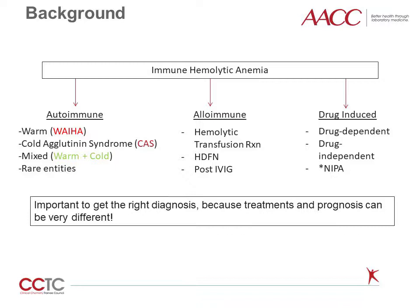Not all hemolysis is mediated by the immune system. Some hemolysis is mediated by other conditions, such as erythrocyte membrane fragility or shearing effect. But when the immune system does mediate hemolysis, it generally falls into one of three categories.